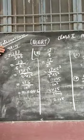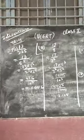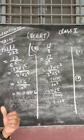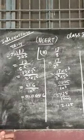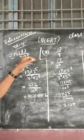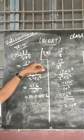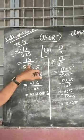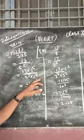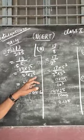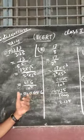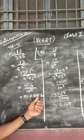In Question 2 of Exercise 1.4, we have to find the decimal expression of those numbers which have a terminating decimal. The first is 13 upon 3125, which can be expressed as 13 upon 5 to the power 5. By multiplying 2 to the power 5 in numerator and denominator, it becomes 416 upon 10 to the power 5, so its expansion will be 0.00416.